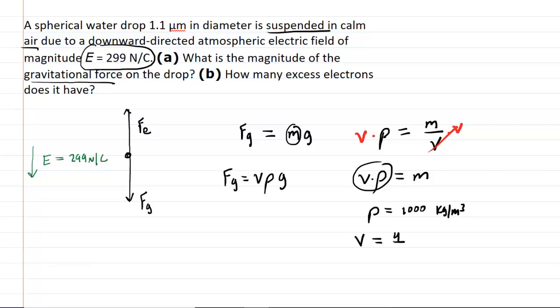Well, the volume of a sphere from geometry is 4 thirds times pi times the radius cubed. So we're going to go ahead and substitute this expression right here for the volume in our Fg equation. So here it is, 4 thirds times pi radius cubed times the density times g.